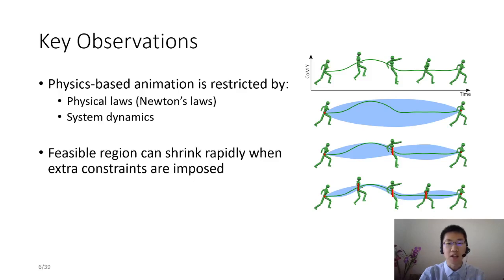We observe that there are strong temporal correlations between successive states in physics-based character animation, which is mainly caused by the restriction of physical laws and system dynamics. By imposing extra constraints to the character states in spacetime, we can effectively shape the feasible region and then robustly learn to train controllers to perform motion tasks.